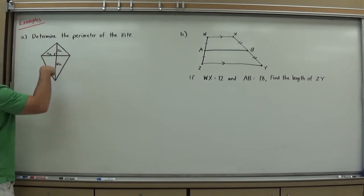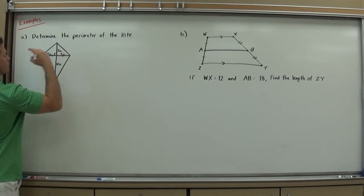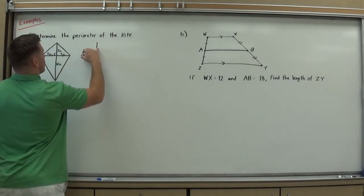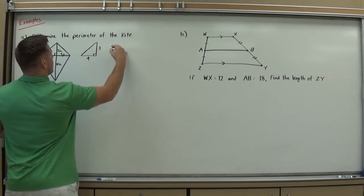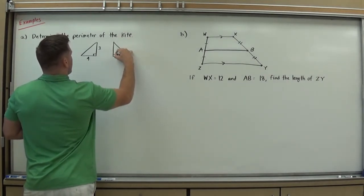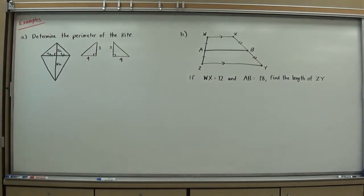One, these are perpendicular, but I also know that these bisect here, which means this four-inch left segment is also four inches over here. And so if I start to break this down, I see that this triangle is a right triangle with four and three, and this other triangle is the same. So if I can find this one length here, then I have two of the perimeter lengths that I'll need.